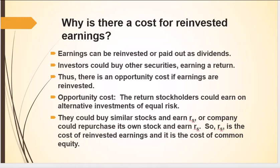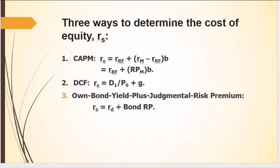Why is there a cost for this reinvested earnings? Essentially, it's an opportunity cost. We could have paid everything out to the shareholders, and then they could decide what to do with their money — they could buy securities from this company or from another company. So this opportunity cost is real, but it doesn't really cost the company anything directly. There are three basic ways we can calculate this cost of equity, or the cost of using retained earnings.